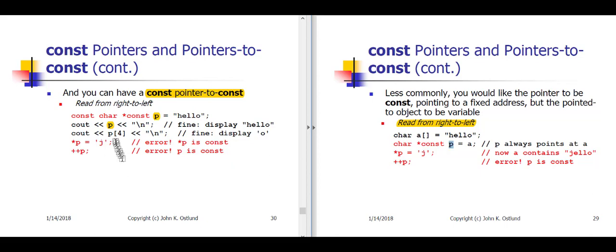We can also use P as an array as long as we're not attempting to modify an element in that array. P sub 4 fetches the sub 4 element from the array, and the sub 4 element is the character little o.